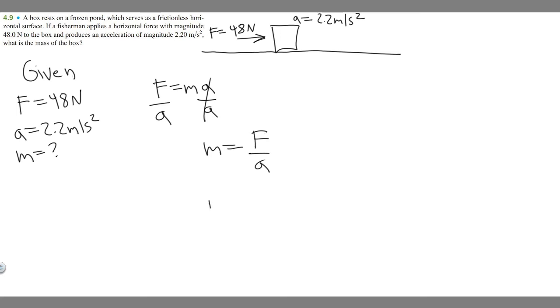So now we can just plug in mass equals our force in newtons, which is 48, over our acceleration, which is 2.2. So if you do 48 divided by 2.2, you're going to get the mass is equal to 21.81.